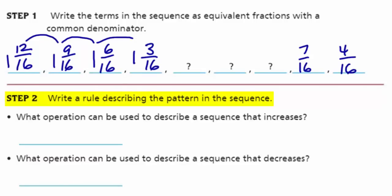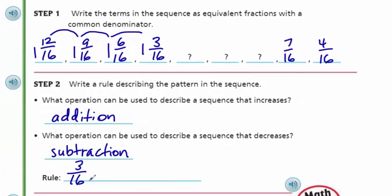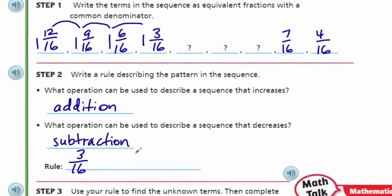Step two. Write a rule describing the pattern in the sequence. What operation can be used to describe a sequence that increases? Addition. What operation can be used to describe a sequence that decreases? Subtraction. Our rule here. Twelve to nine is a difference of three. There's a difference of three from nine to six. There's a difference of three with six and three. It's decreasing by 3/16. I can even double check that by saying, if I were to take 3/16 and add that on to the term in front of it, would it get me back? And it would.